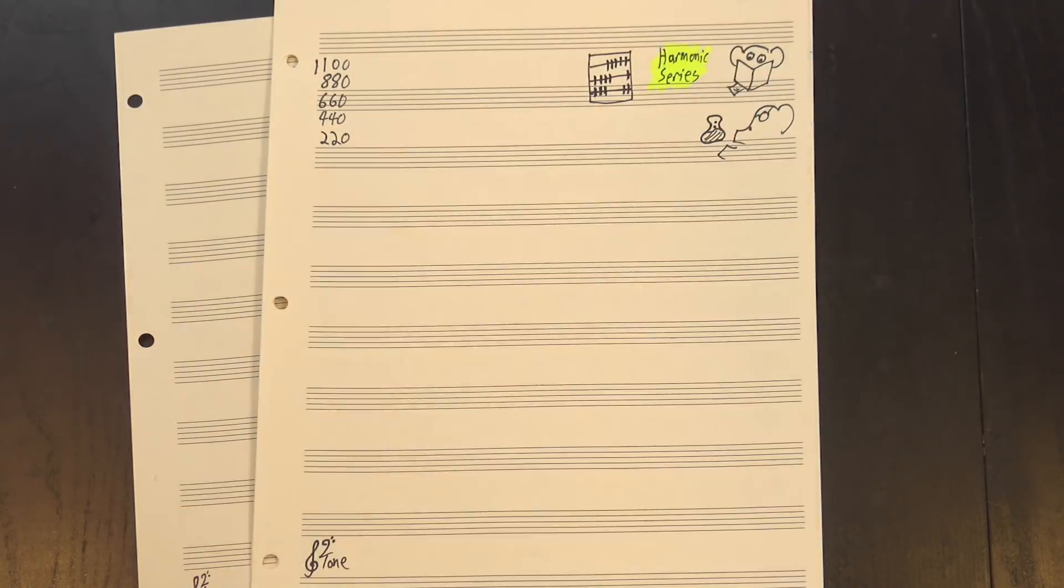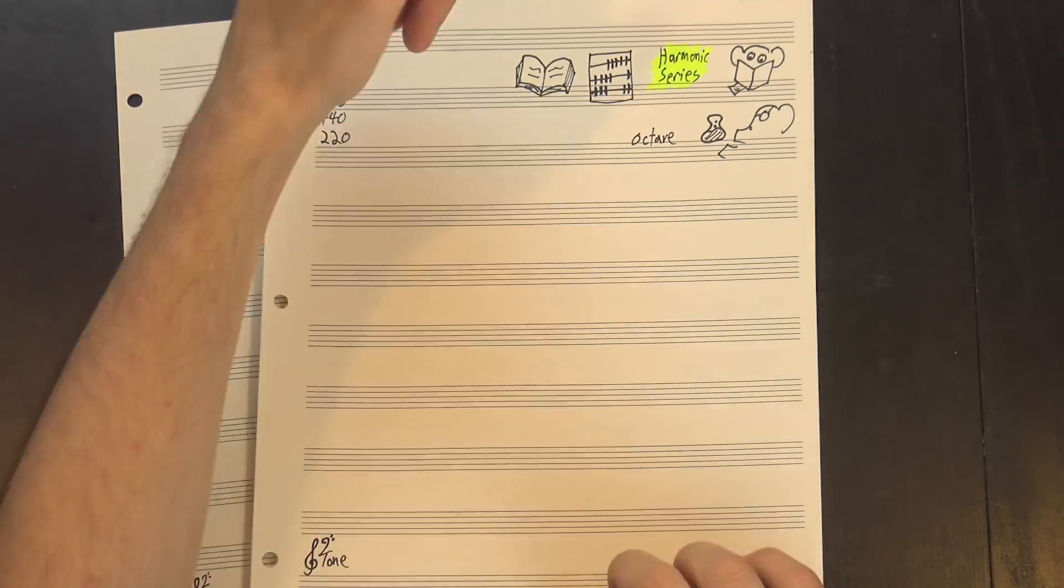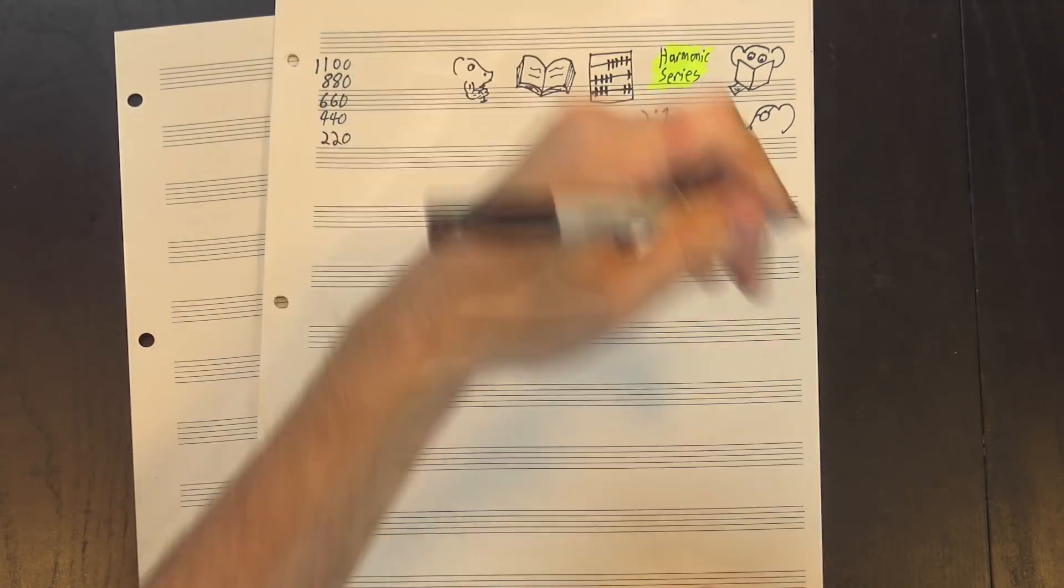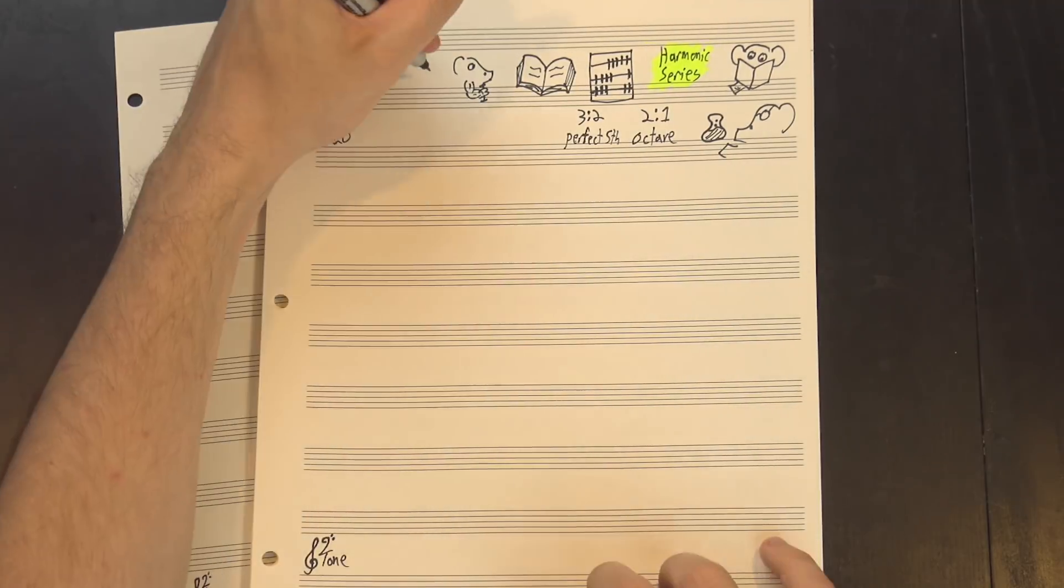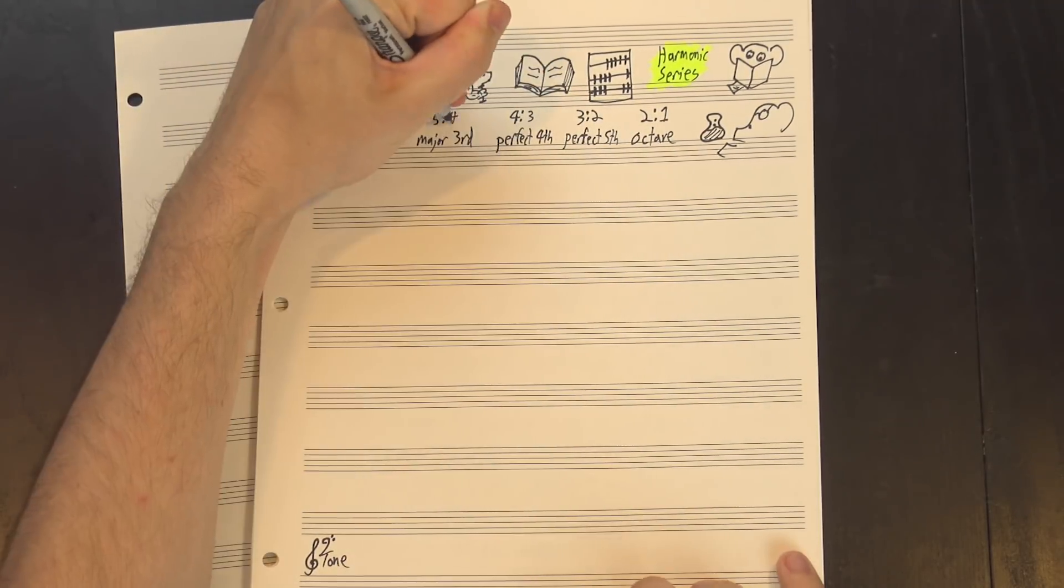This gives us a predictable set of frequency ratios, and those ratios are how we define different intervals. For instance, the octave, or strongest interval, is a doubling in frequency. The perfect fifth is a ratio of 3 to 2, and it's only slightly less stable. Then the perfect fourth is 4 to 3, the major third is 5 to 4, and so on.